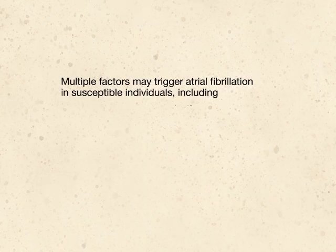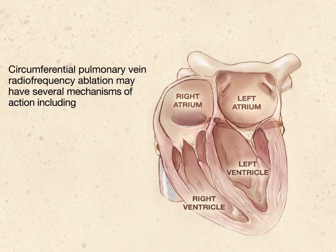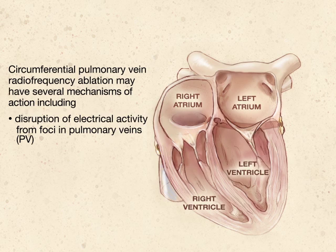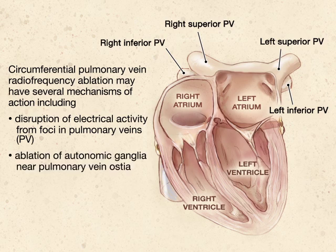Multiple factors may trigger atrial fibrillation in susceptible individuals, including premature atrial depolarization and focal atrial tachycardia originating in the pulmonary veins. Circumferential pulmonary vein radiofrequency ablation disrupts transmission of electrical activity from arrhythmogenic foci in the pulmonary veins. Other mechanisms include ablation of autonomic ganglia, located near the ostia of the pulmonary veins, and disruption of sites of micro-reentry.